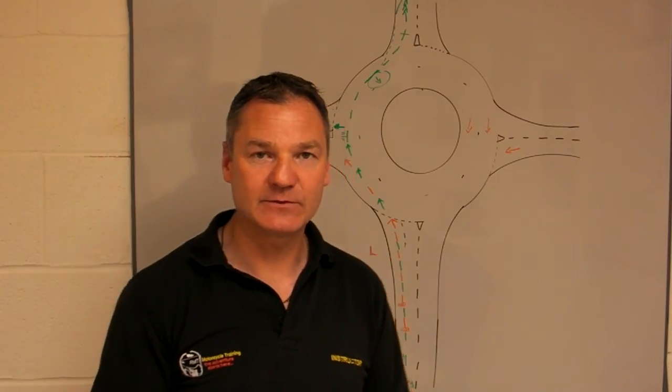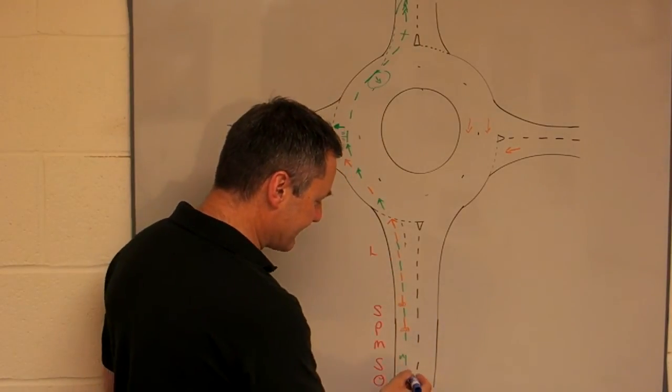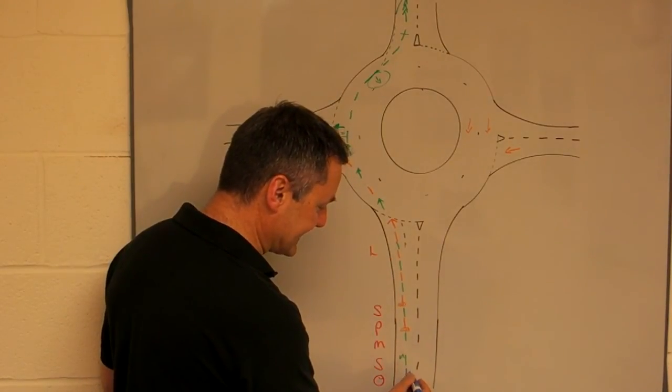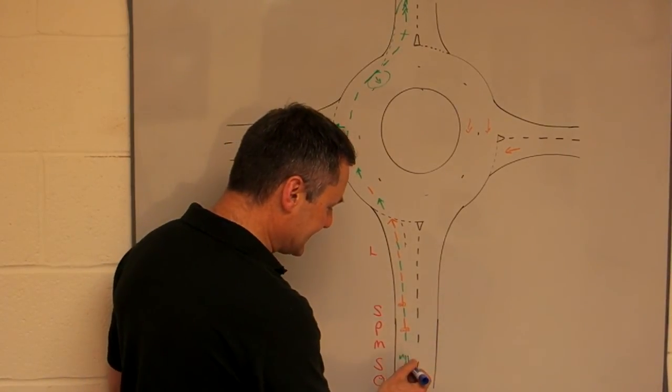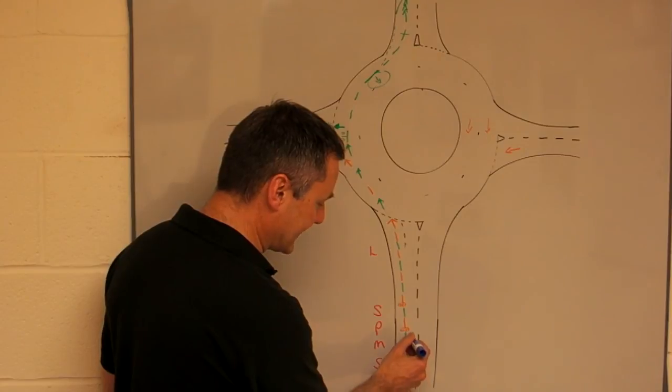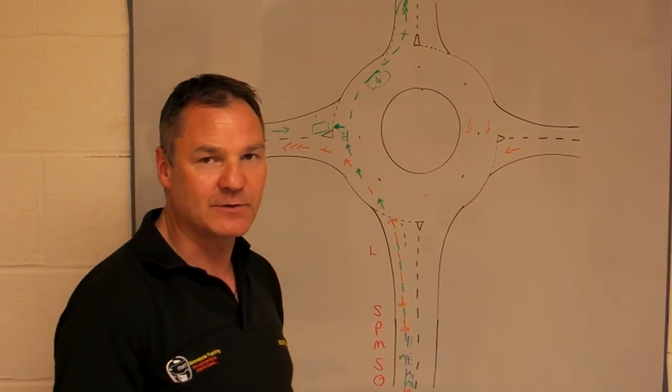For our right turn at the roundabout, exactly the same again. As we approach, we carry out an observation in the right mirror, we then indicate right to inform people which way we intend to go.